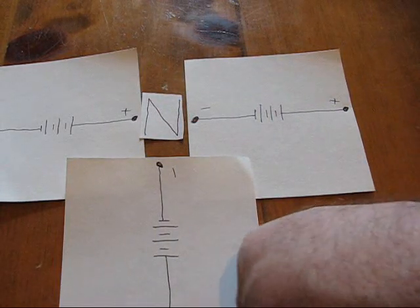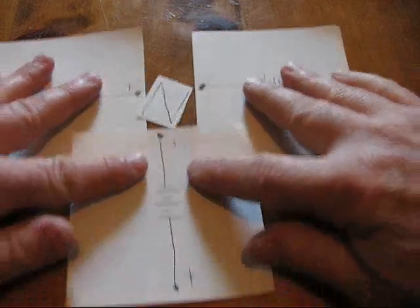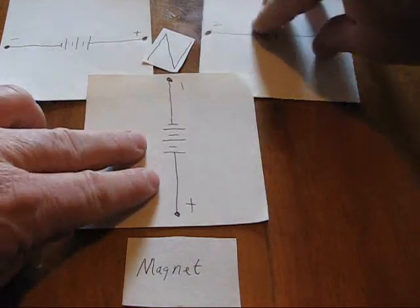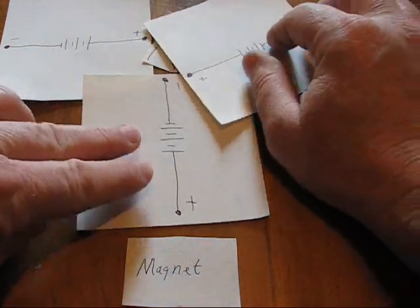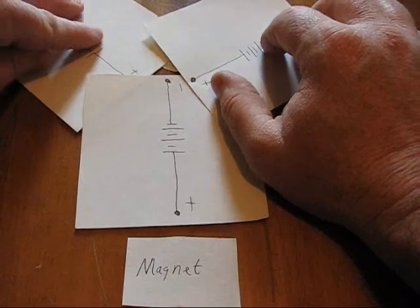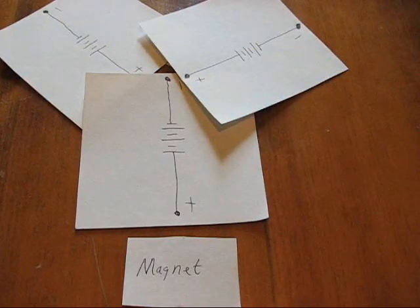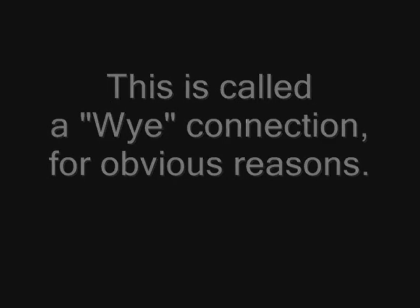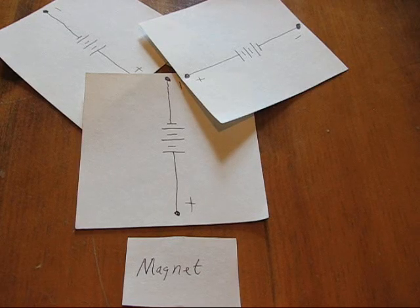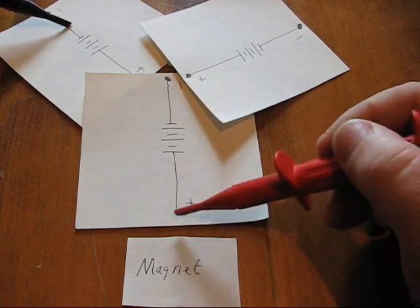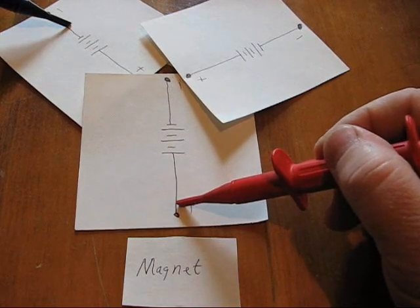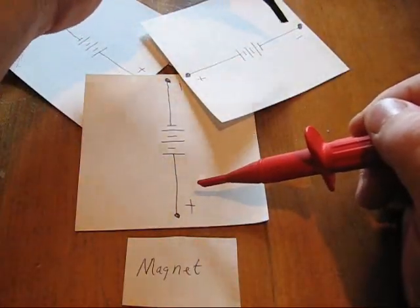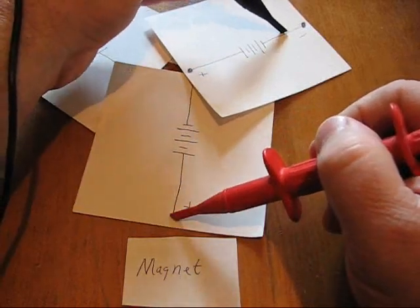So it comes around to down here. You can't see it, but there we go. Now from here to here we've got 12 volts, 6 volts here. From here to here we've got 12 volts.